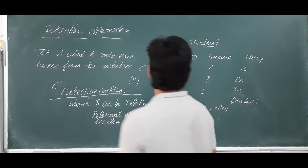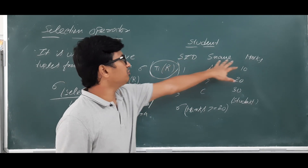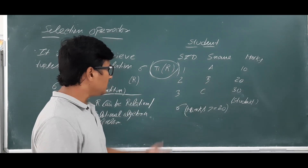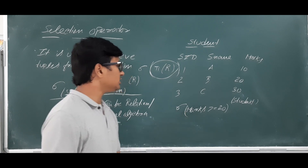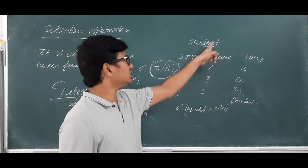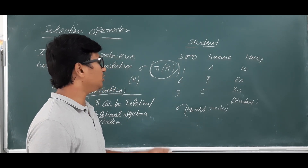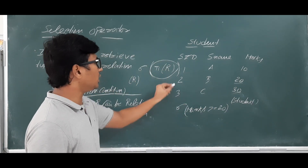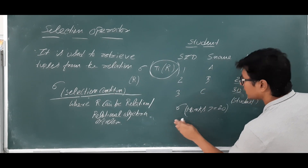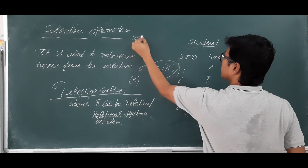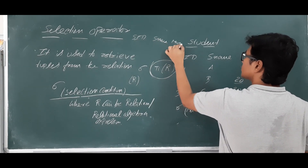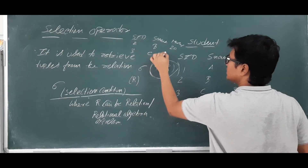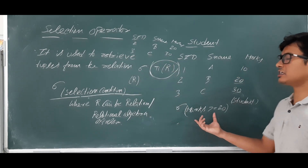Let me explain with a small example. We have a student table with attributes: student ID, student name, and marks. The selection condition is marks ≥ 20 applied on the student relation. The tuples which have marks greater than or equal to 20 satisfy the condition. The output retrieves those tuples — for example, (2, B, 20) and (3, C, 30) — all attributes are shown for matching rows.